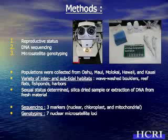The methods we use include DNA sequencing and microsatellite genotyping, as well as observing the reproductive status for all individuals collected. We collected populations of 40 individuals from all of the major islands — not Kahoolawe and Lanai, though. We collected from a variety of habitats: intertidal, sub-tidal, wave wash, boulders, reef flats, fish ponds, and boat harbors. We dried silica samples in the field for later DNA extraction or immediately from fresh material. For sequencing, we used markers from the nuclear, chloroplast, and mitochondrial genome, and had seven reliable microsatellite markers developed.